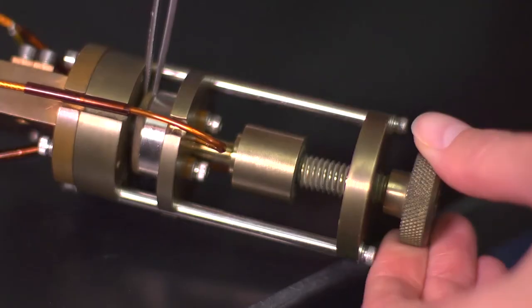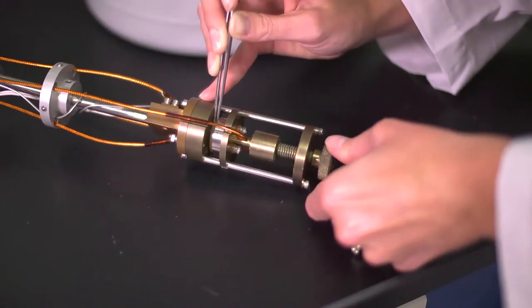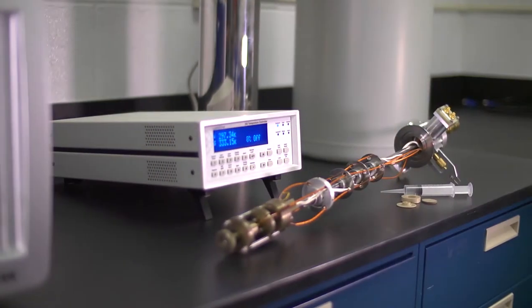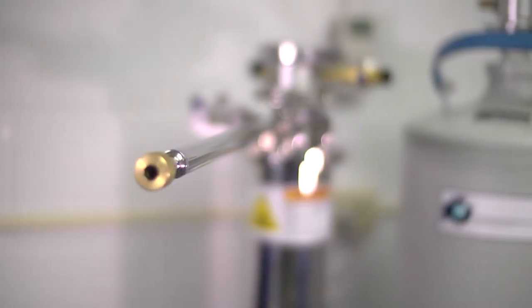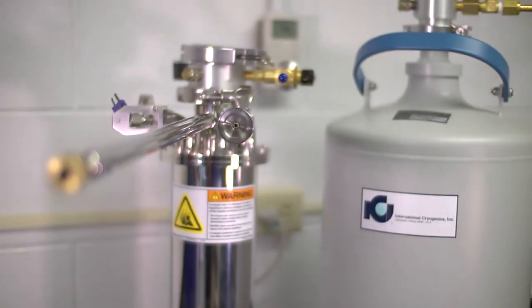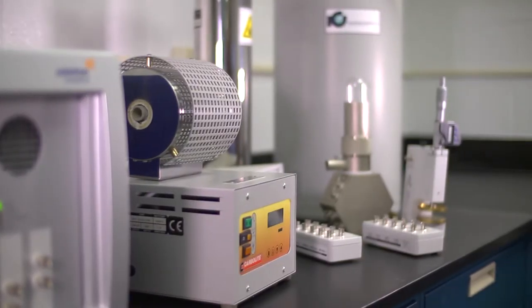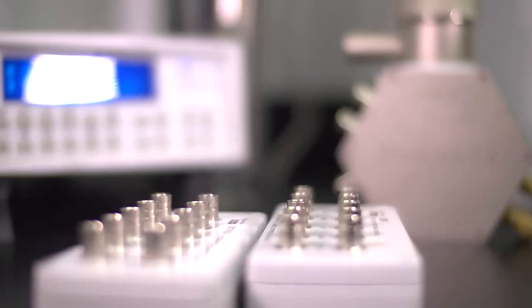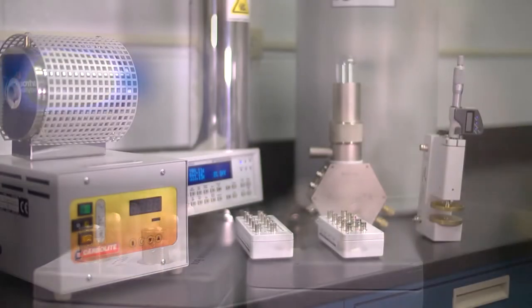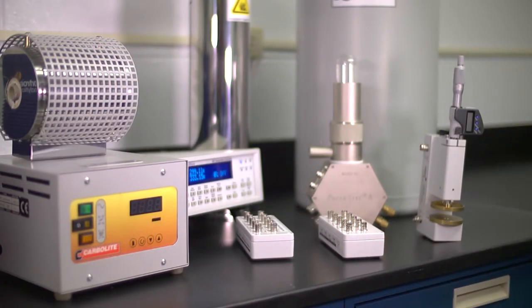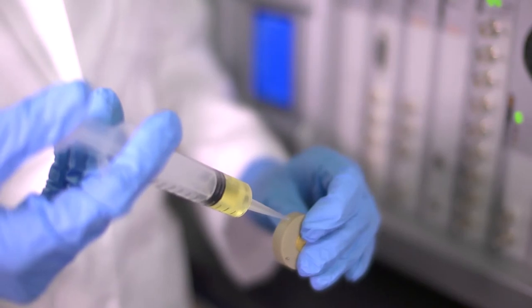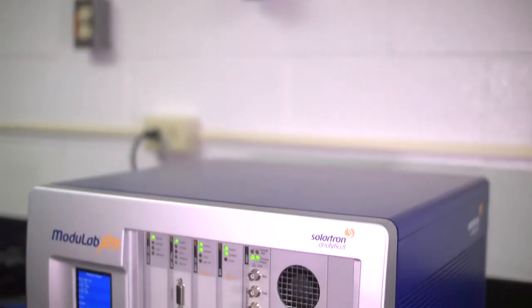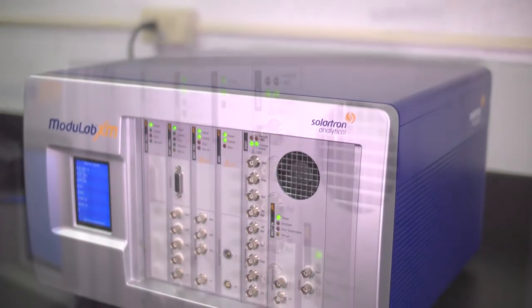Modulab XM-MTS can be configured with a wide range of environmental test packages, including cryostat and furnace systems. Based on your application profile, Solartron can provide a customized test solution configured to your exact needs and specifications. This turnkey system provides the materials researcher with a fully automated system with installation, training and support included.